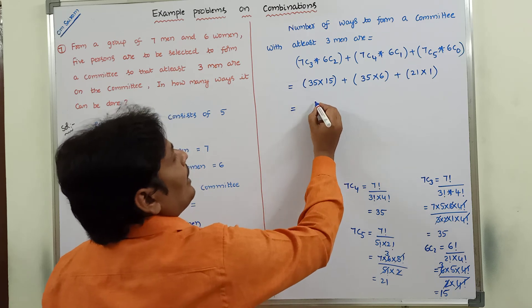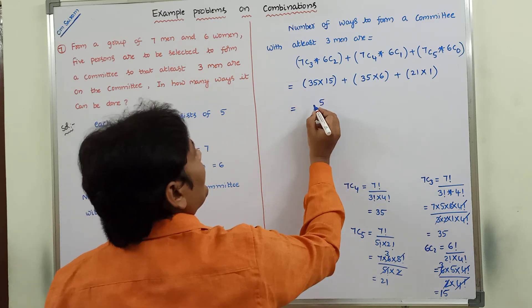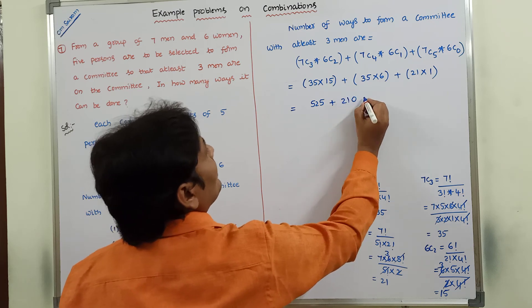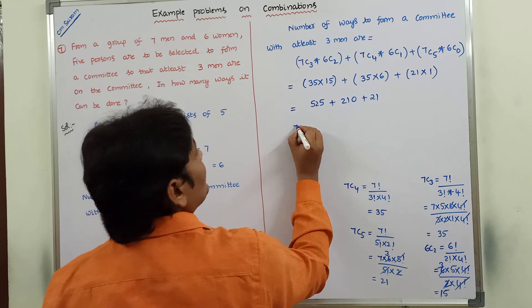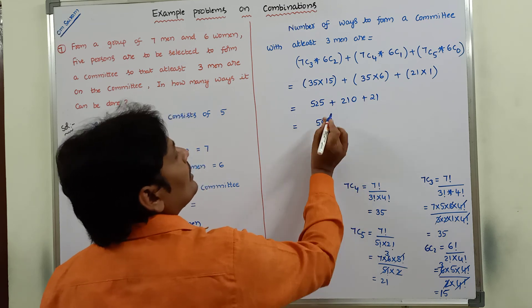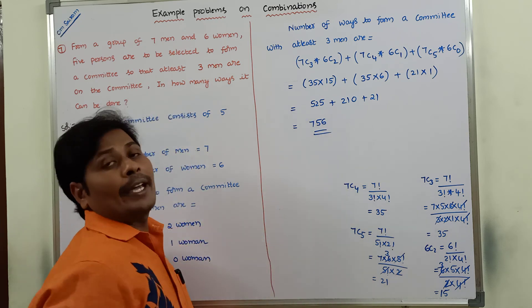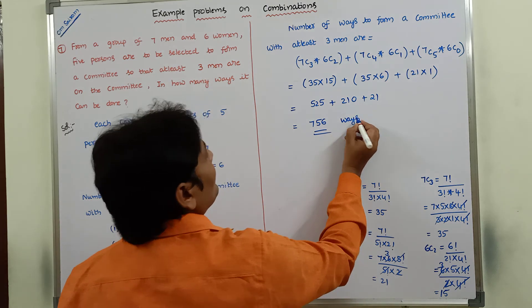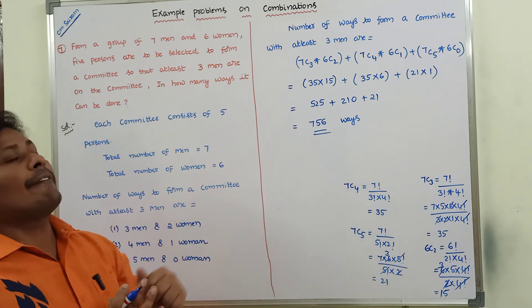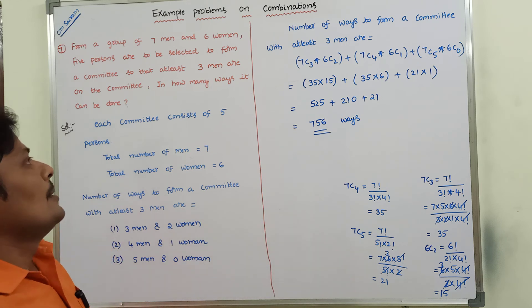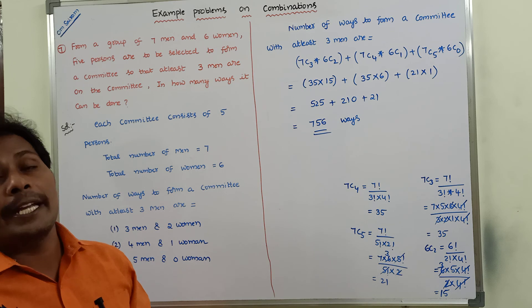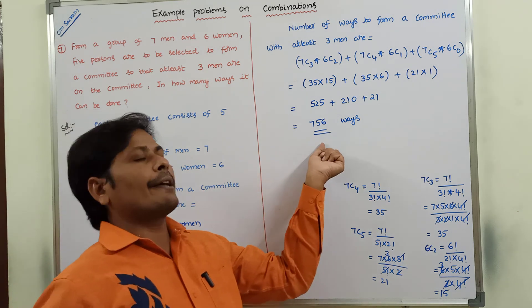Calculating the totals: 35 into 15 equals 525, plus 35 into 6 equals 210, plus 21 into 1 equals 21. So the total number of ways equals 756. Therefore, the number of ways to form a committee with at least three men among seven men and six women for a five-person committee is equal to 756 ways.